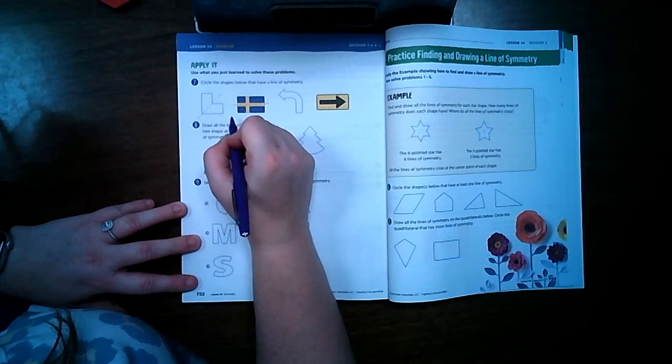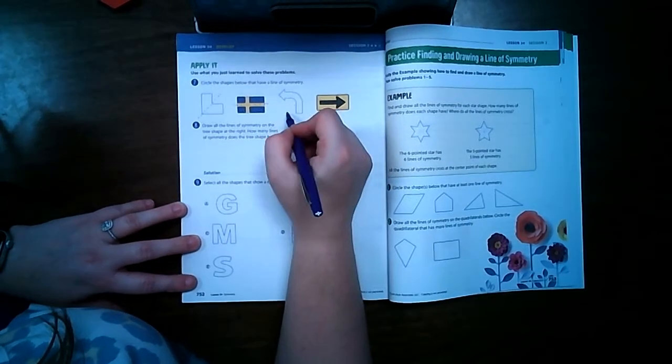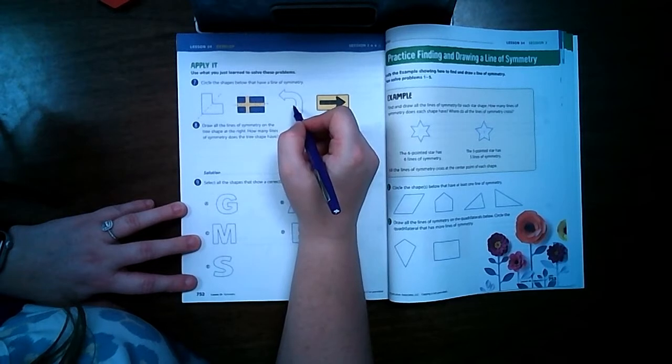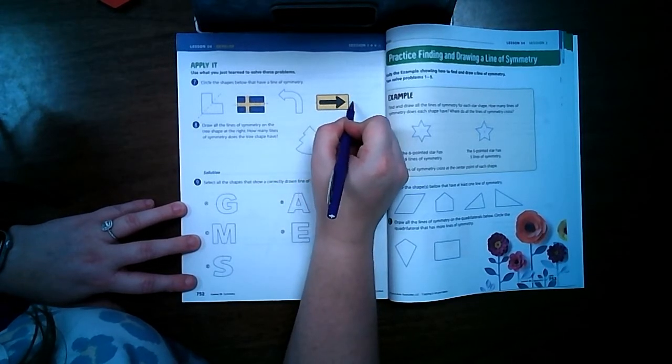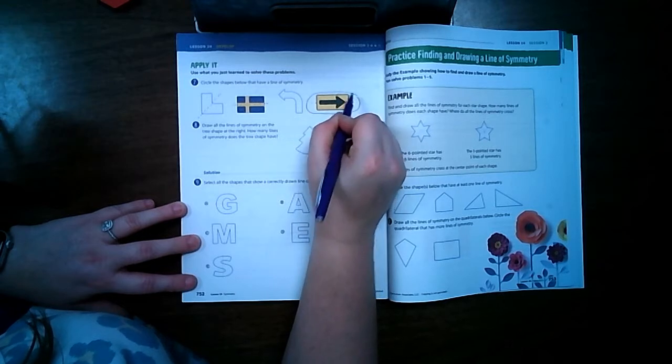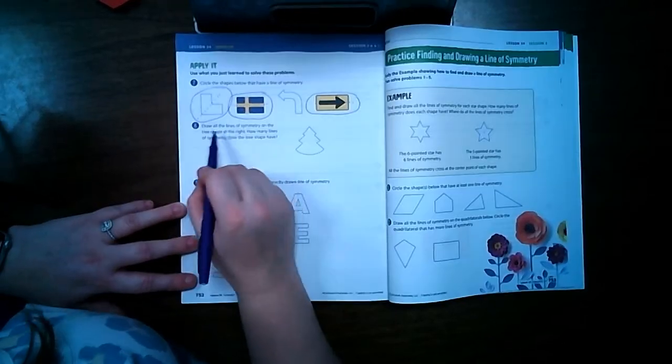Because the yellow line is off-centered just a little bit. On this one there's no lines of symmetry, but on this one we can cut it right down the middle. So we're going to circle these three right here.